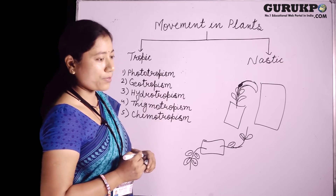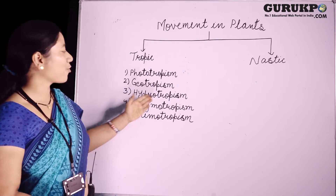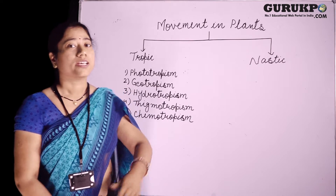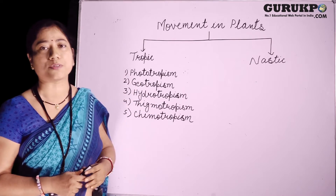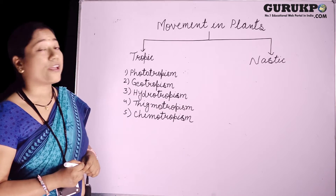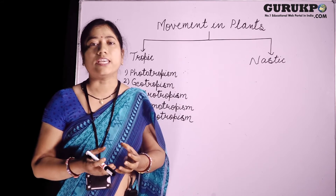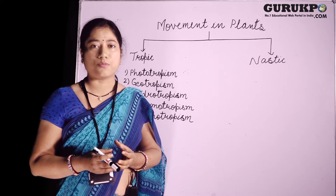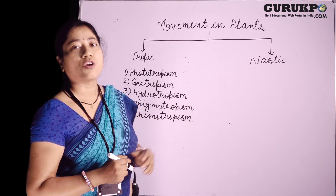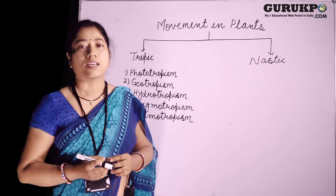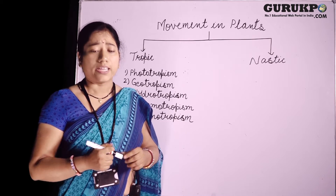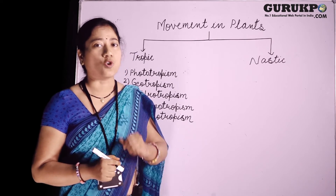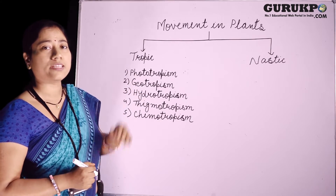Now next is hydrotropism. Hydrotropism is the movement of a plant part in response to water. Hydrotropism is stronger than geotropism. We can understand this by an example. We will take some germinated seeds in moist sawdust and put them into a sieve. After some days, we will observe that the radicle will come out from the pores of the sieve. After some more days, we will observe that these radicles will move back towards the sawdust, showing that hydrotropism is stronger than geotropism.